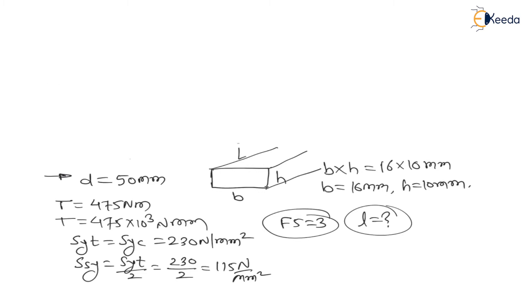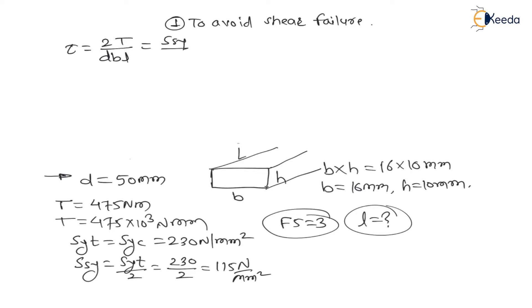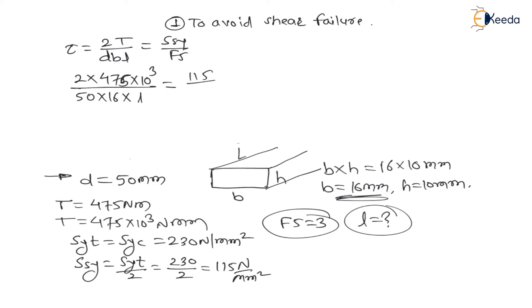First, assuming shear failure: to avoid shear failure, the shear stress in the key is 2T divided by DBL, and as per maximum shear stress theory this equals Ssy divided by factor of safety. Substituting values: 2 × 475 × 10³ divided by 50 × 16 × L equals 115 divided by 3. Solving, the length of key is 30.98 mm, approximately 31 mm.